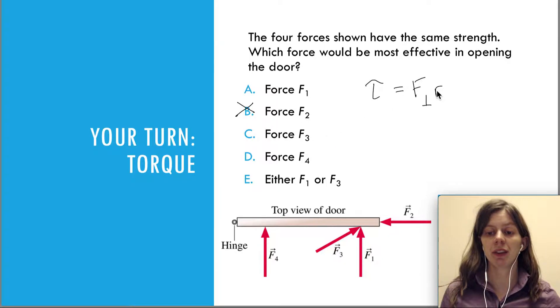We said that R is the distance from the pivot to where the force is applied. The bigger the R, the more torque. So F1 has an R that is this big while F4 has an R that is that big. So F1 definitely exerts more torque than F4. So we can cross out F4.